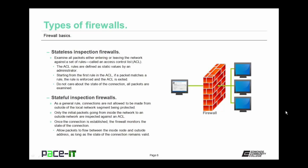Then there are stateful inspection firewalls. A stateful inspection firewall doesn't really care about the packets — it only cares about the state of a connection between two endpoints. As a general rule, connections are not allowed to be made from outside of the local network segment into the protected segment. Only the initial packets going from inside the network to a destination outside are inspected against an ACL. If the ACL allows those packets to leave and a connection is established, the firewall only monitors the state of that connection, allowing free flow of packets as long as the connection state remains valid.